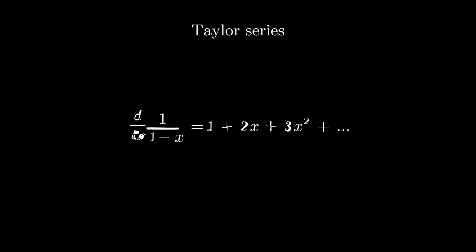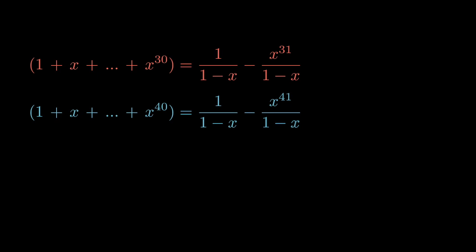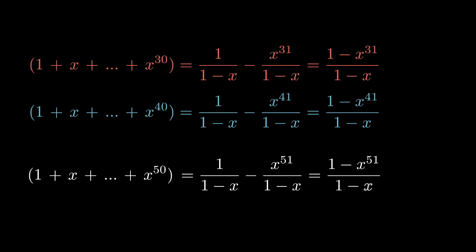For our first multiple, we need to cut off all the terms with powers higher than 30. For the second, the polynomial stops at x to the 40th, and likewise the third. I hope you can see that it is easier to multiply these functions than the actual polynomials.